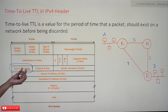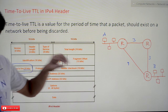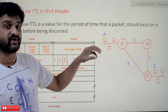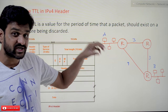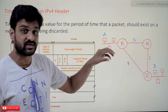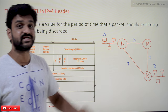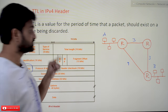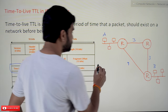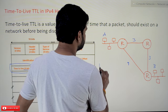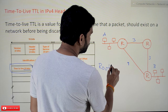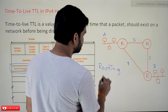The length of the Time to Live field is 8 bits, so using 8 bits we declare the value for Time to Live. Before understanding why we have to provide this field, we will try to understand the concept called routing loops.